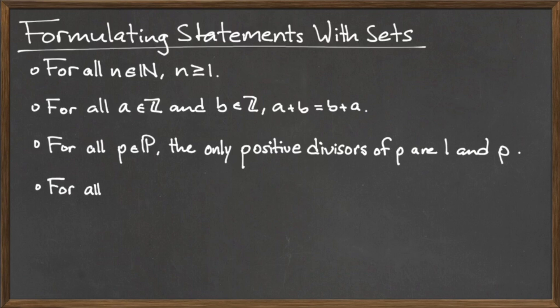Statement 4. For all integers A and all integers B, where A is not equal to 0 and B is not equal to 0, the GCD of A and B is greater than or equal to 1.